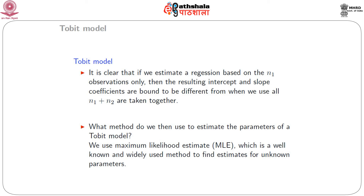In the probit model, we can also have latent variable models that do not involve binary dependent variables. Suppose y* = Xβ + u, where u|X ~ N(0, σ²), but what we observe is y = max(0, y*). The Tobit model uses MLE to estimate both β and σ². It is important to realize that β estimates the effect of X on the latent variable y*, not on the observed dependent variable y.